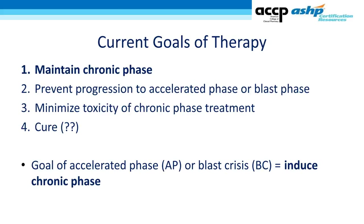CML is divided into three phases: the chronic phase, where the Philadelphia chromosome is the only chromosomal abnormality and patients are typically asymptomatic; the accelerated phase, where more chromosomal abnormalities appear and patients become more symptomatic; and blast crisis, which mimics acute leukemias in its aggressiveness. Goals of therapy are to maintain patients in the chronic phase, prevent progression to accelerated or blast phase, minimize therapy toxicity, and potentially — with question marks — eventually achieve treatment-free remission for a small subset of patients.